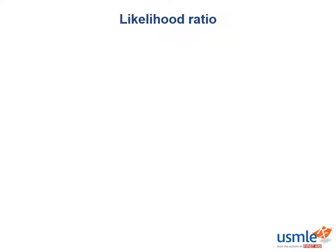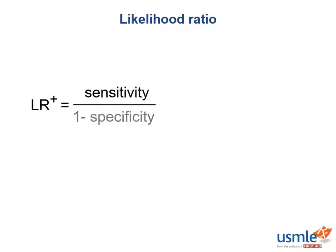Knowing all this, it brings us to our likelihood ratio. The likelihood ratio for a positive test result takes the number of people with the disease who have a positive test result — also known as the sensitivity — and divides this by the number of people without disease who get a positive test result, or 1 minus the specificity.